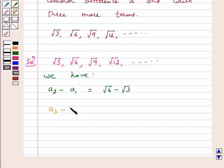A3 minus A2 is equal to root 9 minus root 6. That is, A2 minus A1 is not equal to A3 minus A2.